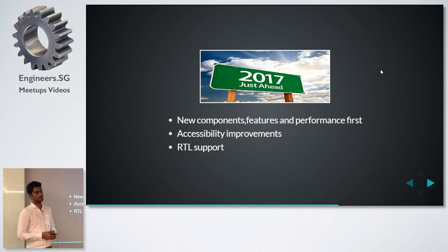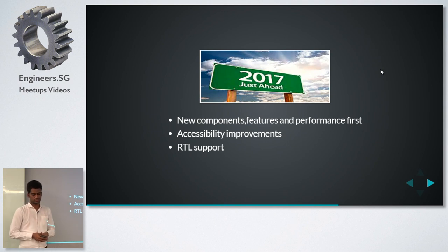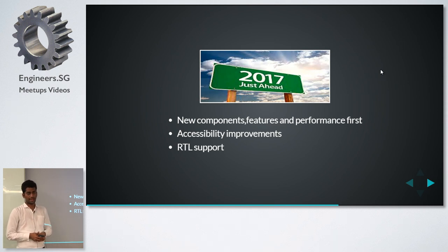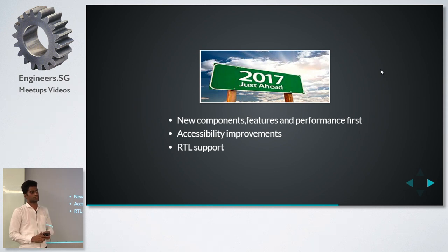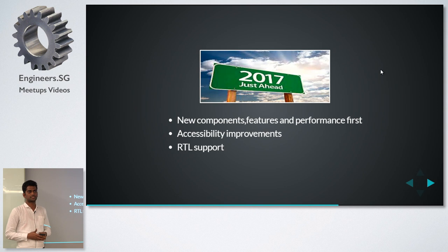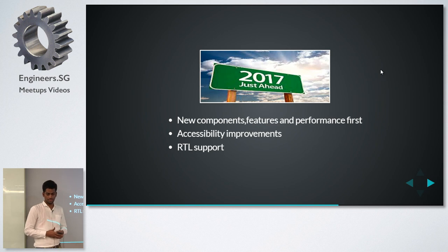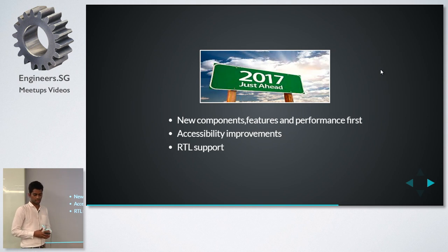What's next in 2017? We already have 80 plus components. The next plan for 2017 is creating new components like a spreadsheet, color picker, and timeline. More focus will be on performance — testing each component to see how much time it takes and what technologies to use for improvement. Accessibility for screen readers and keyboard support will also be improved, and RTL (right to left) support is planned because some clients are requesting it.